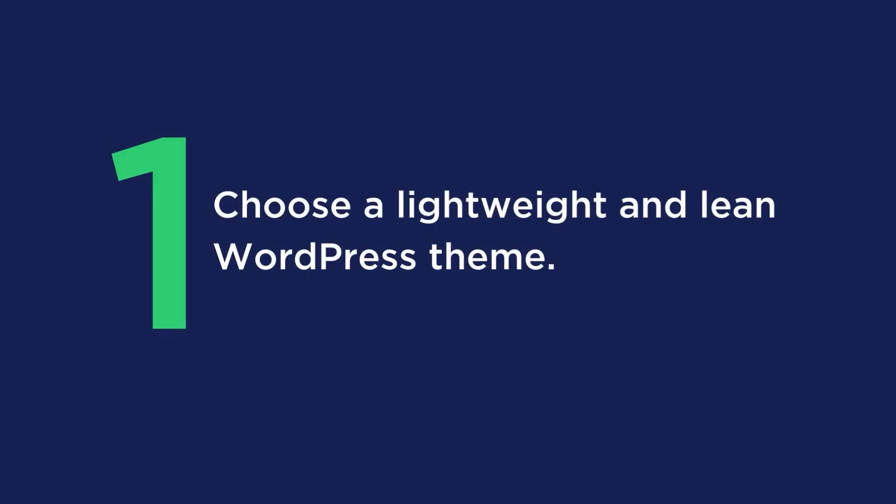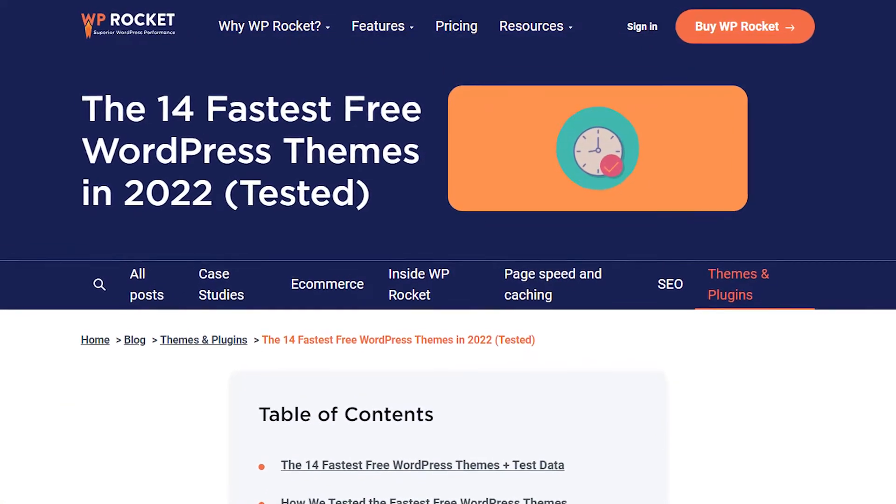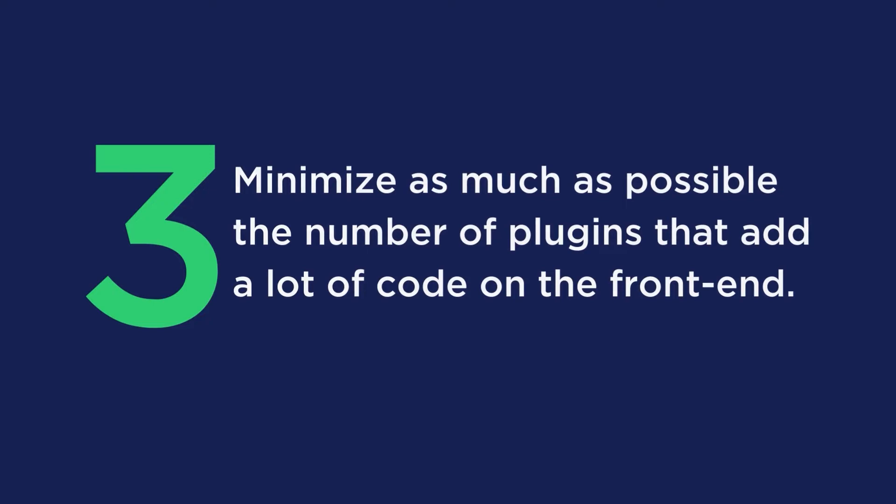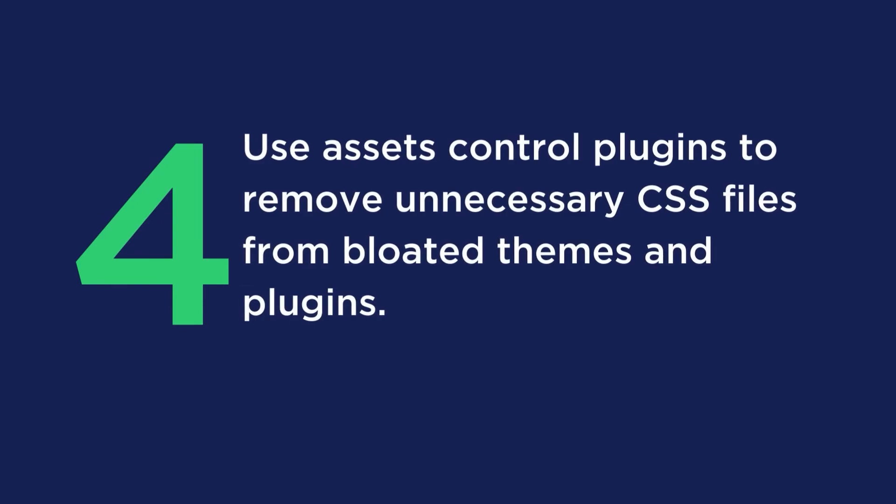On top of this, here are some CSS optimization tips. Tip one: choose a lightweight and lean WordPress theme — check out our list of the fastest free WordPress themes if you're unsure. Tip two: prioritize using themes and plugins with modular CSS inclusion. Tip three: minimize the number of plugins that add a lot of code on the front end. Tip four: use asset control plugins to remove unnecessary CSS files from bloated themes and plugins. Install WP Rocket today to improve your page speed and Core Web Vitals.